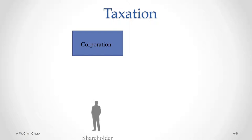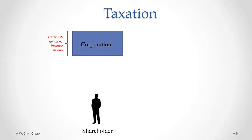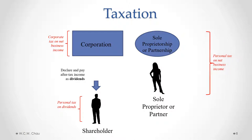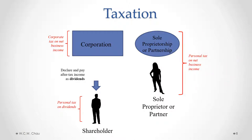Let's see graphically how corporate taxation works. We have a corporation with a shareholder. The corporation earns business income, pays corporate income tax on that income, and with its after-tax income it pays dividends to its shareholder. The shareholder then pays personal tax on those dividends. Compare that with a sole proprietorship or partnership: the sole proprietor or partner pays personal tax directly on the net business income, because with a sole proprietorship or partnership the owner and the business are one and the same.